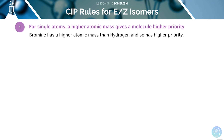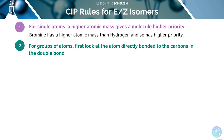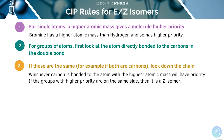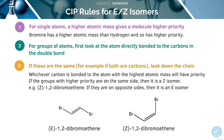For single atoms, a higher atomic mass will give a molecule higher priority. For groups of atoms, we have to look at the atom directly bonded to the carbons in the double bond. If these are the same, look down the chain — whichever carbon is bonded to the atom with the highest atomic mass will have priority. If the groups with the higher priority are on the same side, then it is a Z isomer. If they are on opposite sides, this means it's an E isomer.